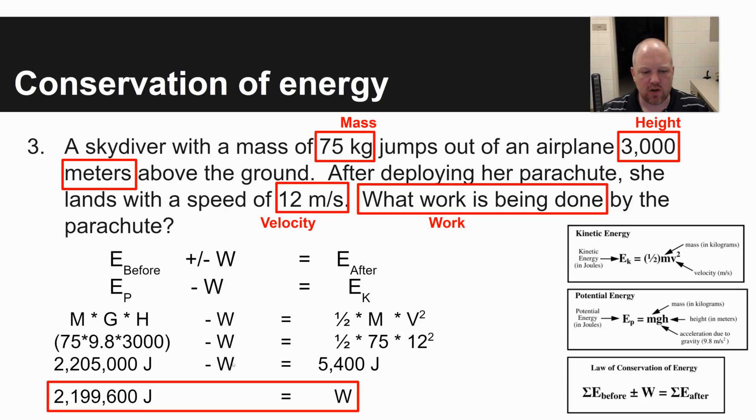And so how do you solve for work? You're just going to isolate work. What I would do is add work to both sides, subtract 5,400 from each side. And so you have a tremendous amount of energy that's lost, 2,199,600 joules lost, over 2 million joules lost due to work. Because if all of that potential energy had been turned into kinetic energy, you would die when you hit the ground.